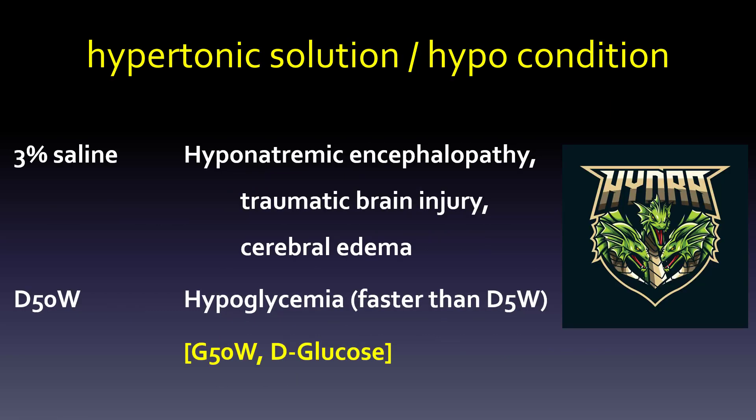For hypertonic solutions used in hypo conditions: 3% saline can be used for hyponatremic encephalopathy, traumatic brain injury, and cerebral edema. D50W (or G50W / D-glucose) is used for hypoglycemia — it acts faster than D5W. The Hydra was a three-headed monster from mythology, and here we have three pathophysiologic head issues: encephalopathy, brain injury, and edema. Hopefully the Hydra mnemonic helps you remember them.